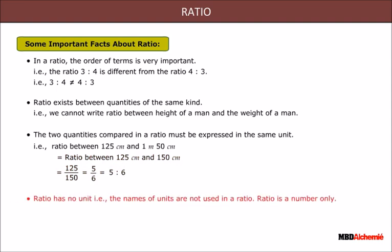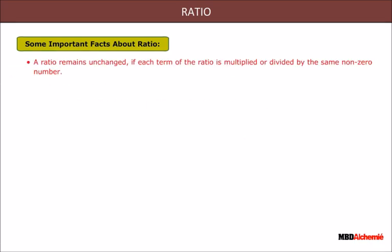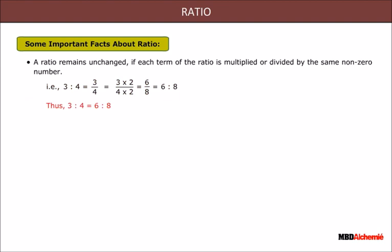The names of units are not used in a ratio; a ratio is a number only. A ratio remains unchanged if each term of the ratio is multiplied or divided by the same non-zero number. For example, 3:4 equals 3/4; multiplying and dividing by 2, we get 6/8, which equals 6:8. Thus 3:4 equals 6:8, and similarly 6:8 equals 3:4.